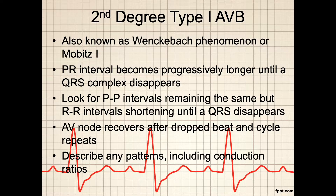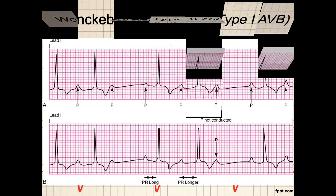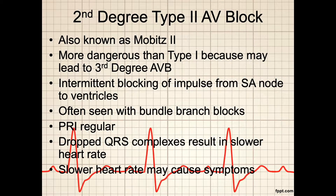In this example of a Wenckebach type 1, we see that for every three P waves there are only two QRS complexes. A P wave occurs, followed by a QRS. A P wave occurs again and the QRS has a slightly longer delay — the PR interval is longer. Then on the third P wave, no QRS complex occurs. We could say this was a Mobitz type 1 with a 3-to-2 P-to-QRS ratio. Second degree type 1 AV blocks are considered more serious than a first degree AV block because they involve more pathology and show a bit of a progression.